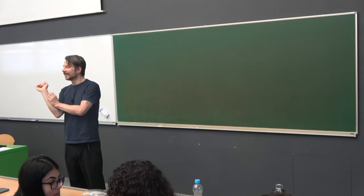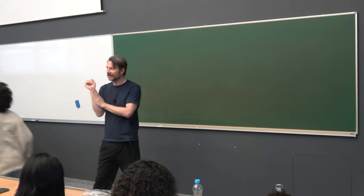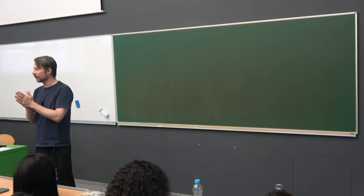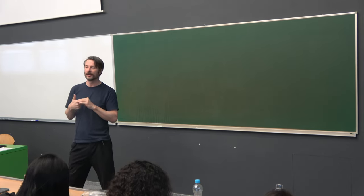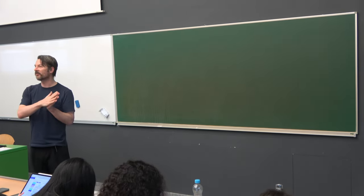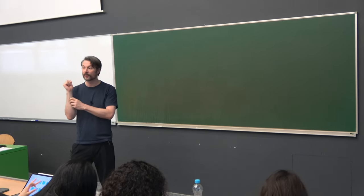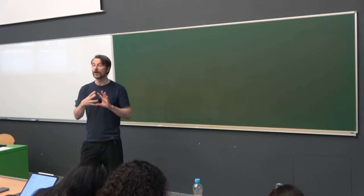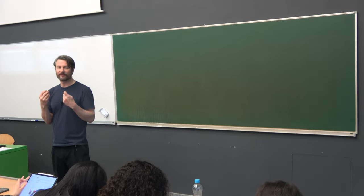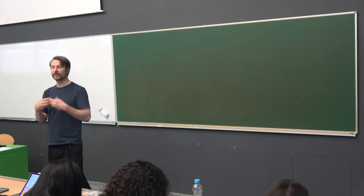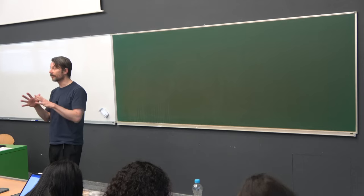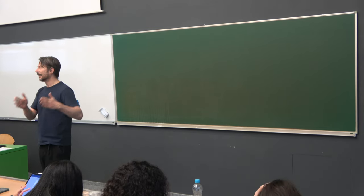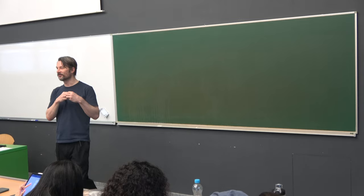Good morning. Today we have two lectures together back-to-back, so it's going to be intense for both sides probably. The first lecture is going to cover the whole variety of receptors of neurotransmitters that we find both in the central nervous system and outside. We'll talk about the individual receptors, what they do, and where in the brain specifically we can find these types of neurons that use these neurotransmitters.